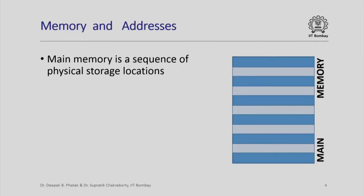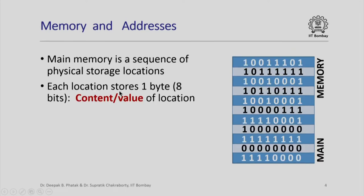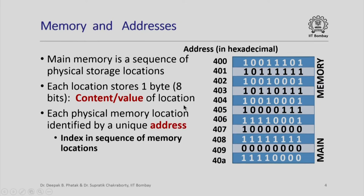Now let us look at memory and addresses. Main memory is really a sequence of physical storage locations — I have denoted here the different locations by different colours. Each location can store 1 byte or 8 bits of information, which we will call the content or value of that location. For example, this location stores the content 1011 1111, and each physical memory location also has a unique address by which it can be identified.